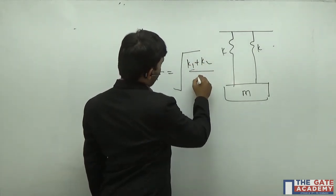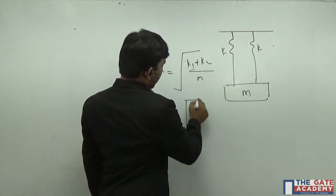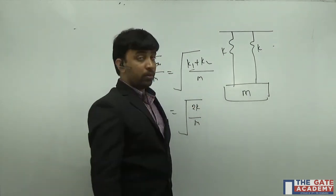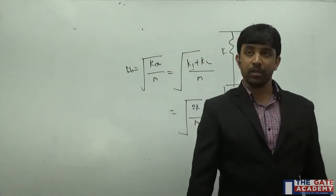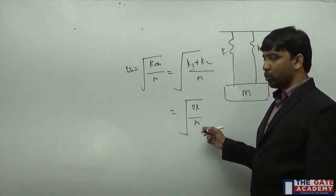k1 plus k2 divided by m. Since both springs are identical, they will have the same spring constant. Therefore, natural frequency is root 2k by m.